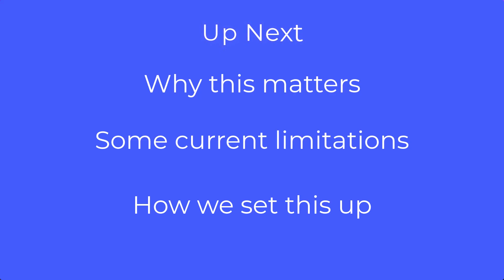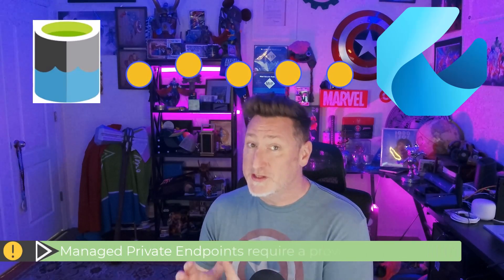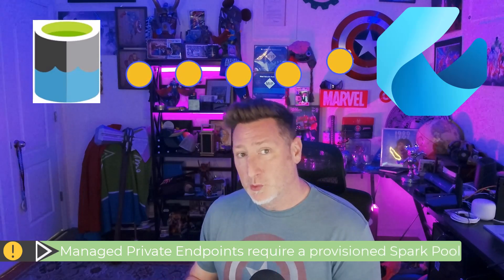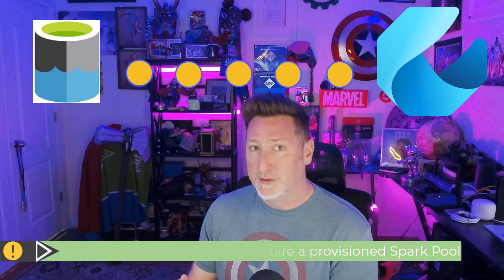Up next, we've got a big one — a massive one, absolutely huge. This is managed private endpoints. Hang with me on this one, because we need to cover why this matters, some current limitations, and how we set this up. Why does this matter? Well, if we're using Spark — and there are a lot of people out there using Spark — this allows us to make connections from our Spark clusters over to private endpoints, and it's going to apply to the entire Spark environment. Keep in mind, this is not going to work for your default pools; you need a specifically provisioned pool. Your startup time will take a little bit longer, but you'll be able to reach private endpoints in storage, Azure SQL databases, and any service that has a private endpoint.